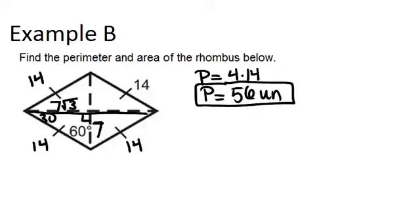With that knowledge, I now know that the length of the diagonals are 14 and 14 root 3. That would be 14, and the other one is 14 root 3.